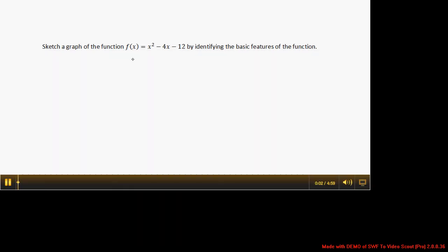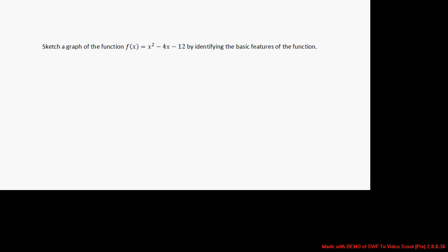We've been asked to sketch a graph of the function f(x) equals x squared minus 4x minus 12. We're going to do that by identifying some basic features that we know about the function. The first thing I always do if I want to create a sketch is I want to identify the type of function that we're dealing with.